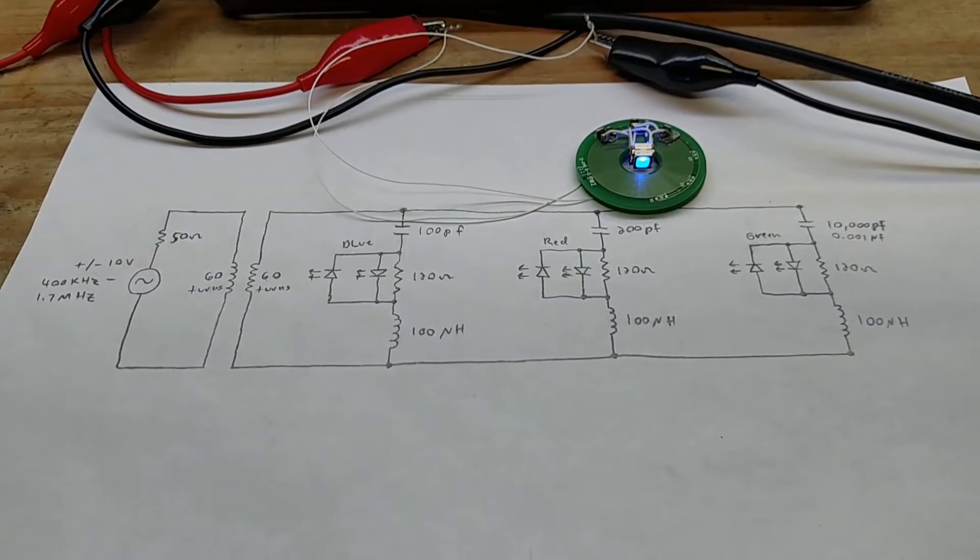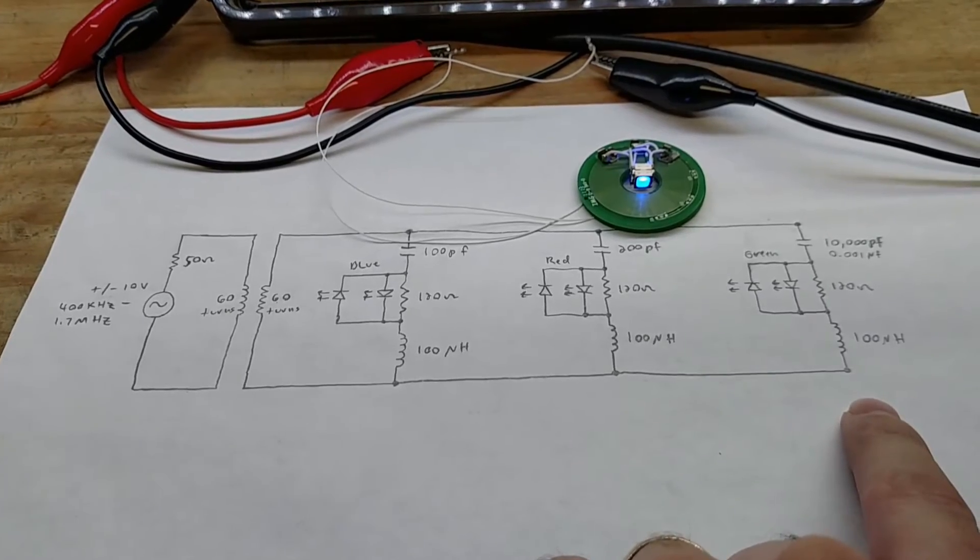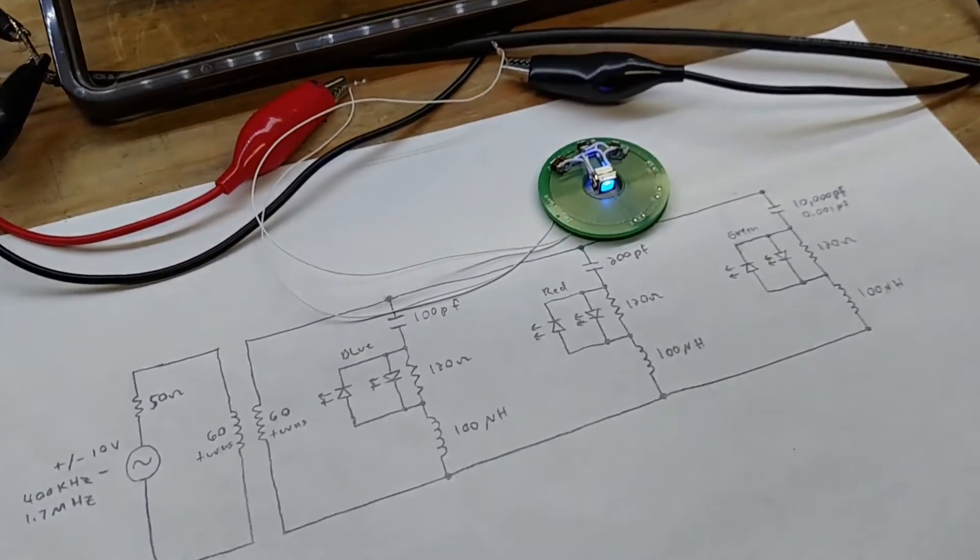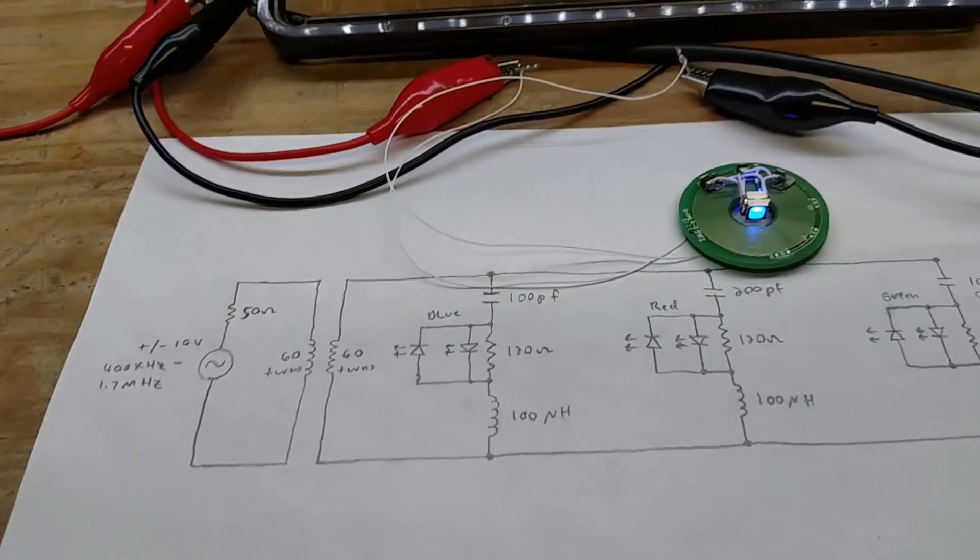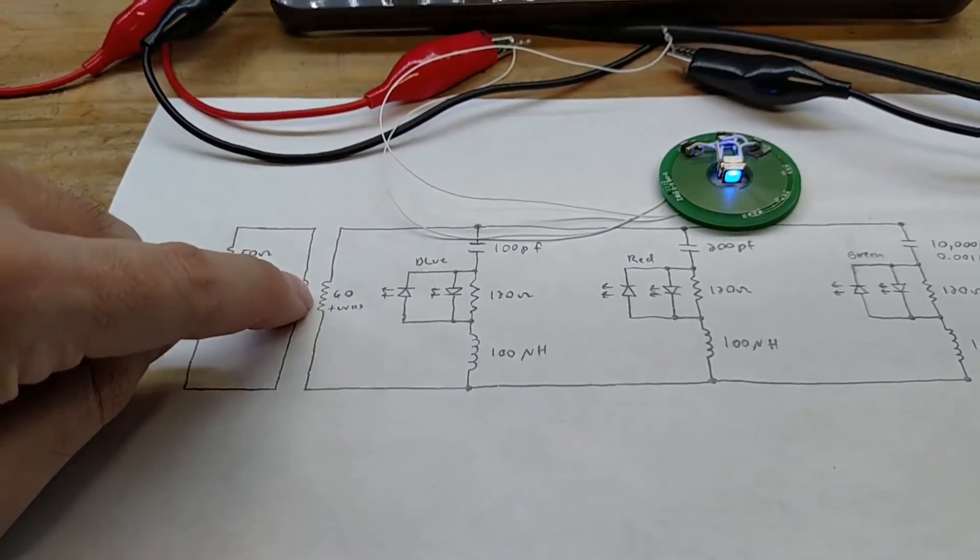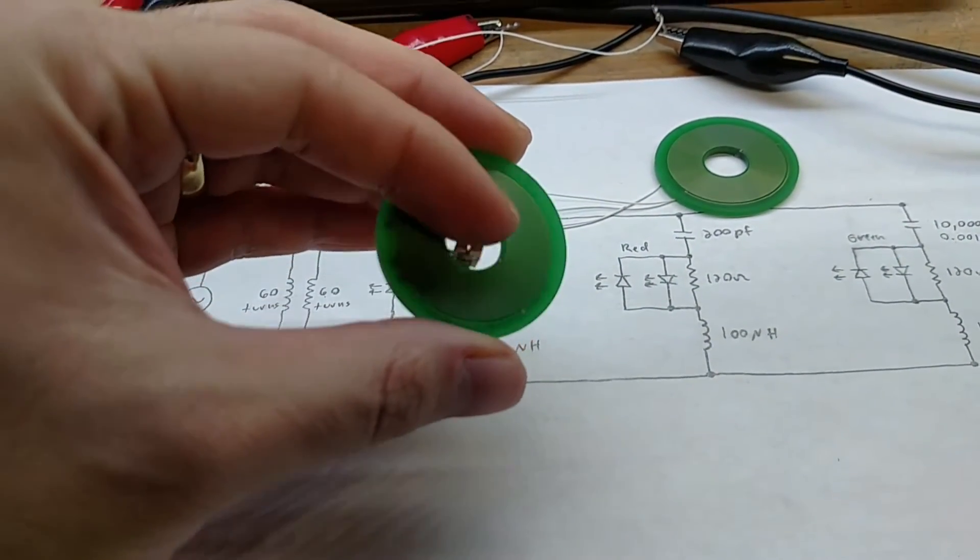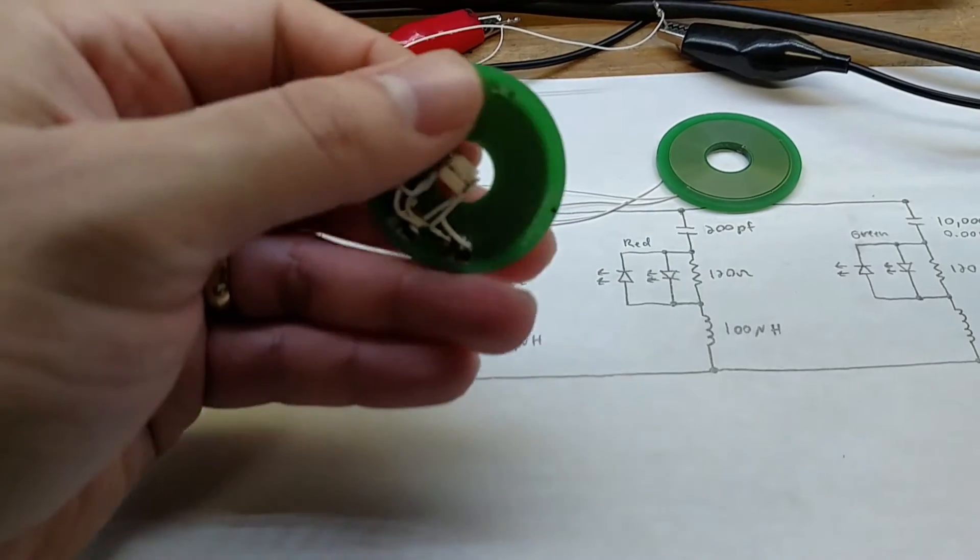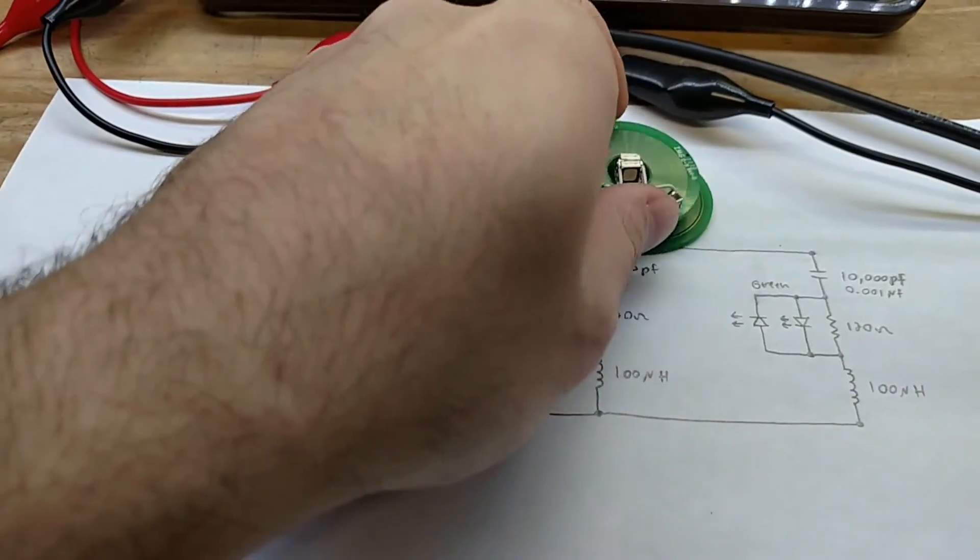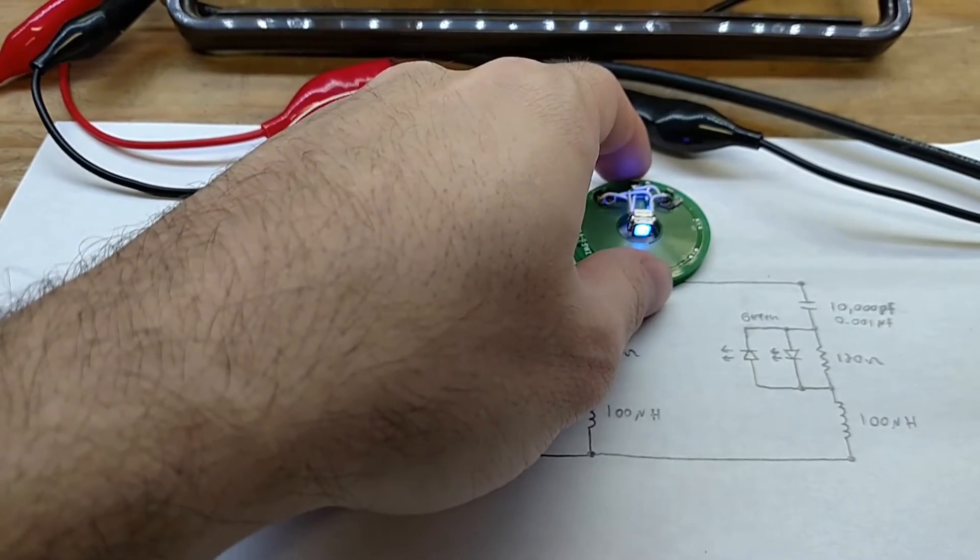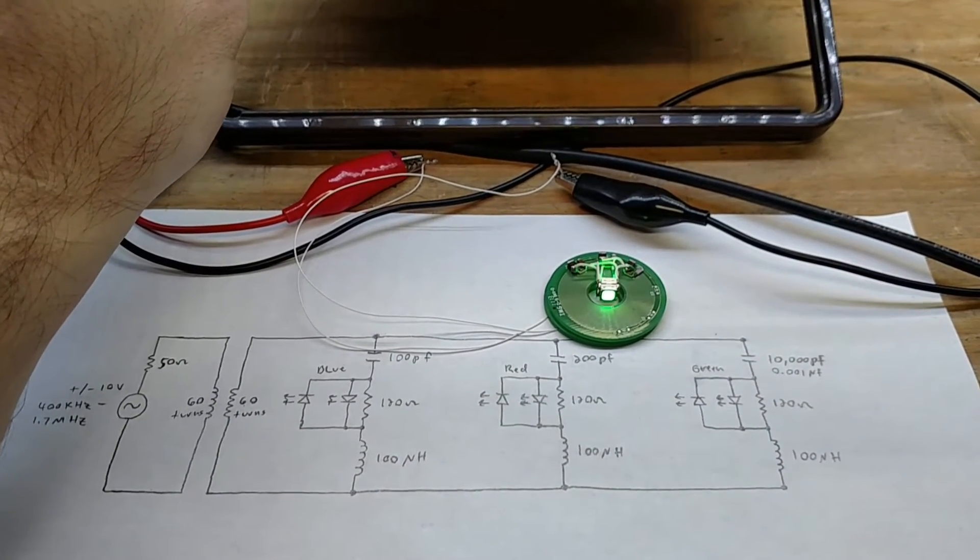Does that answer all the questions? If not, leave some comments and I can answer them. It's essentially little notch filters or passband filters for the different frequencies. The green is at 500 kilohertz, this one was 1.2 megahertz, and this one's 1.6 megahertz. The math might be off a little bit because we're not taking into account the inductance of the receiver coil, but since it's just an air core transformer with no core, it shouldn't be too high.